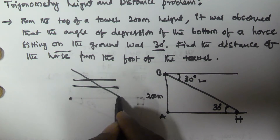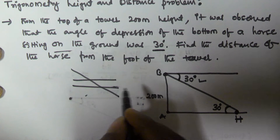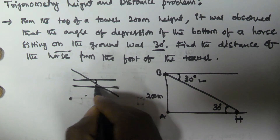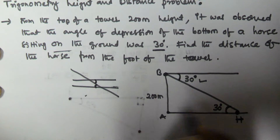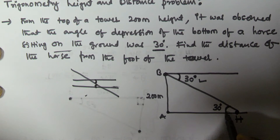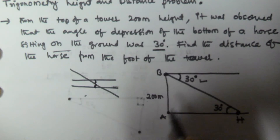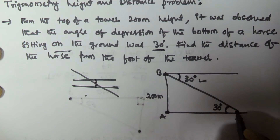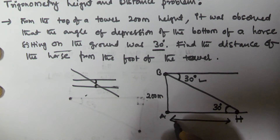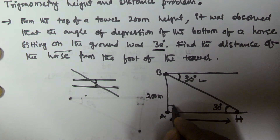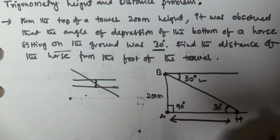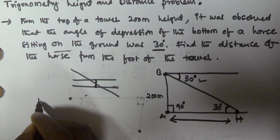Whenever two parallel lines are cut by a transversal, the alternate interior angles are equal. So if this angle is 30 degrees, then the angle at the base of the triangle also becomes 30 degrees. We know the height AB, and we have to find the distance AH — the distance of the horse from the foot of the tower. We also know this is a 90-degree angle.